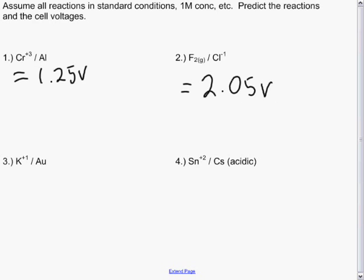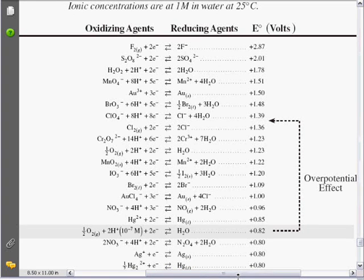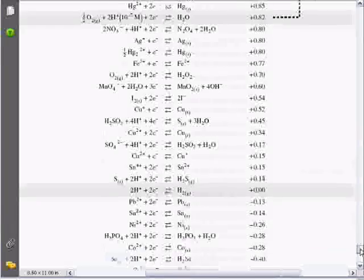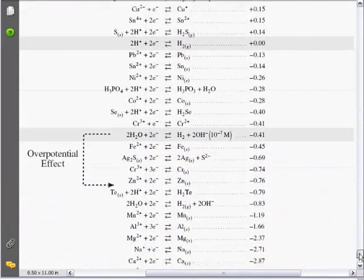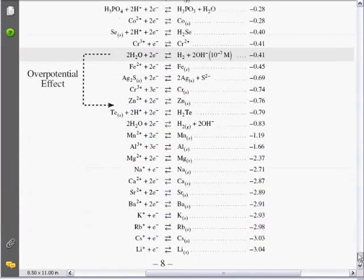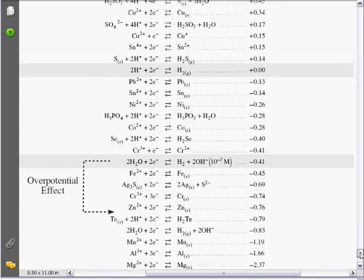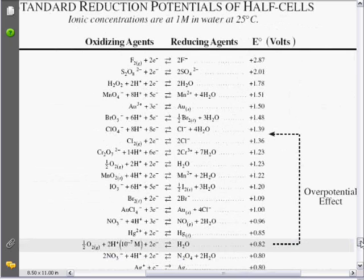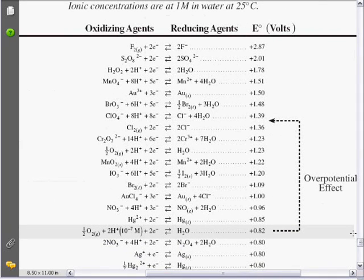Question 3: K plus 1 and gold. Back to here. K plus 1 and gold. Well, here is gold. And where is K plus 1? K is down here.